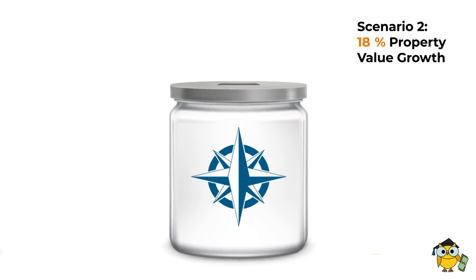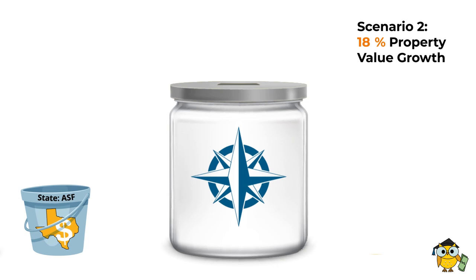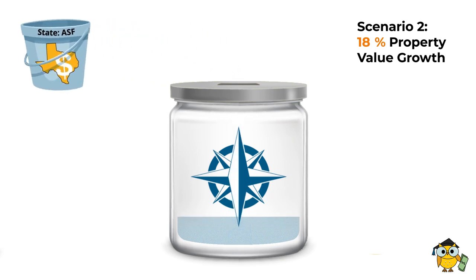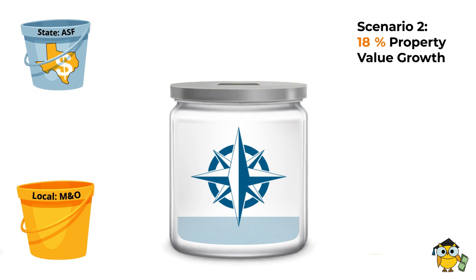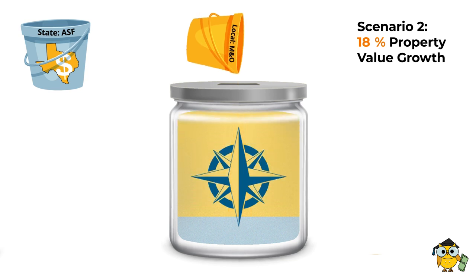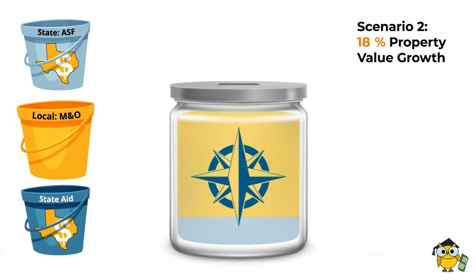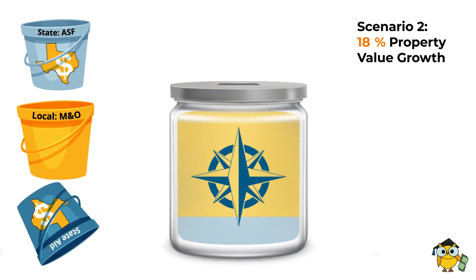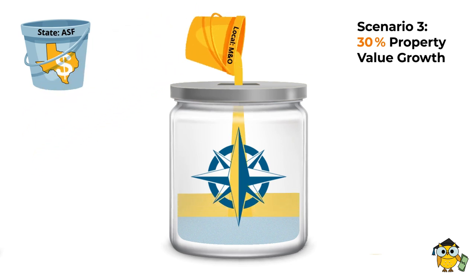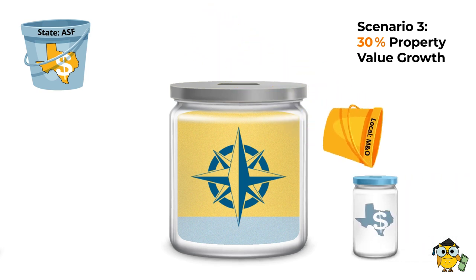Like the first scenario, the first bucket to fill the tier one jar is the state's ASF bucket, pouring in that same designated amount. The next bucket — local collections from the M&O tax rate — now has a lot more to pour in because of the change in property value growth. At 18%, this bucket fills the tier one jar right to the top, so there is no room for additional state aid and the district does not get anything from the third bucket. In the last scenario, at 30% growth as currently seen in Leander ISD, the local bucket fills the tier one jar to the top, but then pours its excess funds into the recapture jar, where it is then sent back to the state.